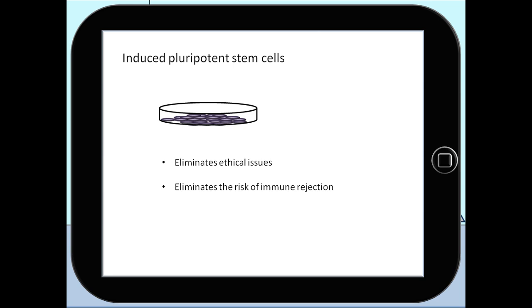The biggest challenge when using induced pluripotent stem cells is the lack of precise methods to make them differentiate into the desired specialized cells efficiently.